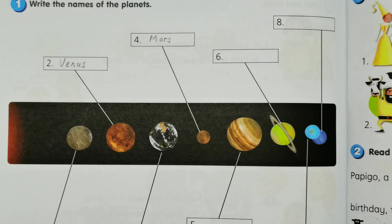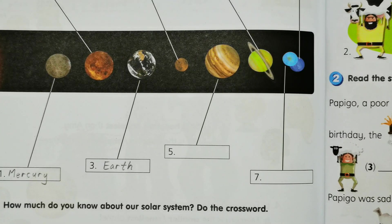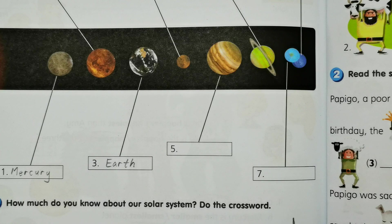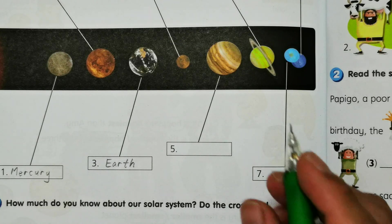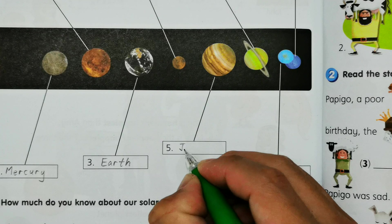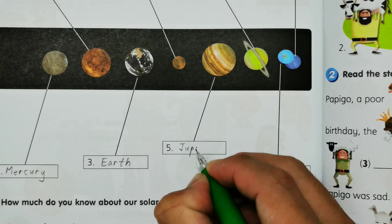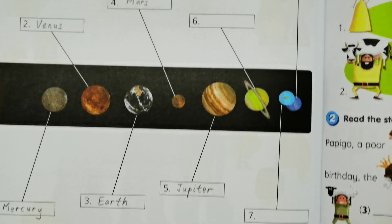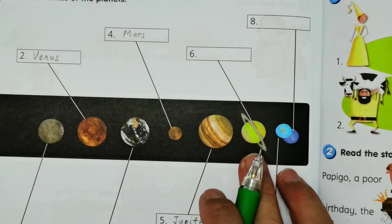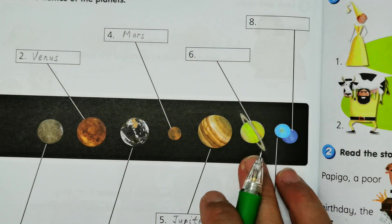And then we have number five, we have the largest planet in our solar system, it is called Jupiter: J-U-P-I-T-E-R. And then planet number six, so we have Saturn.